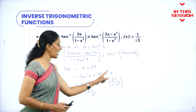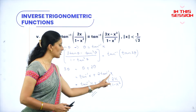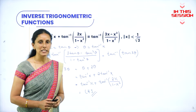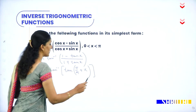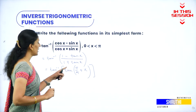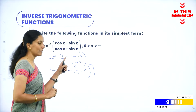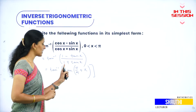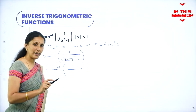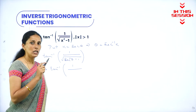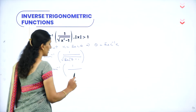From the formula of 2 tan inverse x, we can write it as tan inverse 2x divided by 1 minus x square. Using the properties of trigonometric function, tan(π/4 + x) is nothing but 1 minus tan x divided by 1 plus tan x. Also, 1 plus tan square theta is secant square theta, and secant square theta minus 1 is tan square theta.